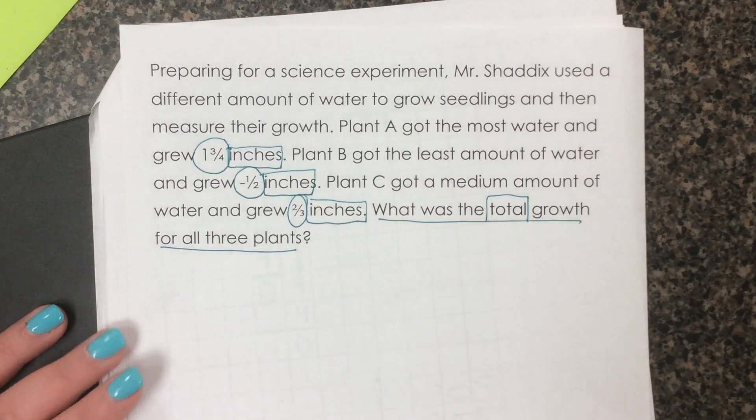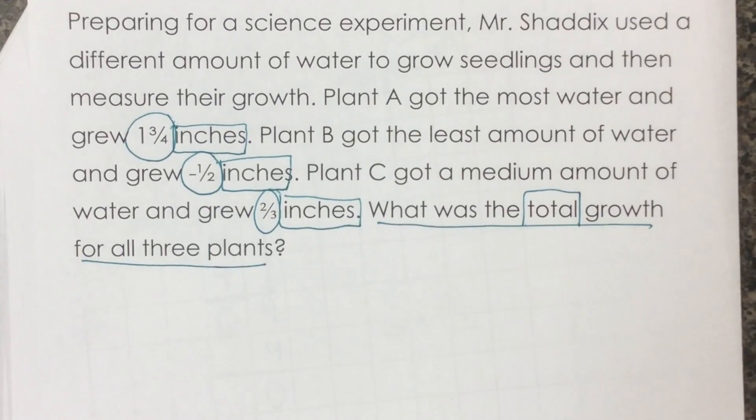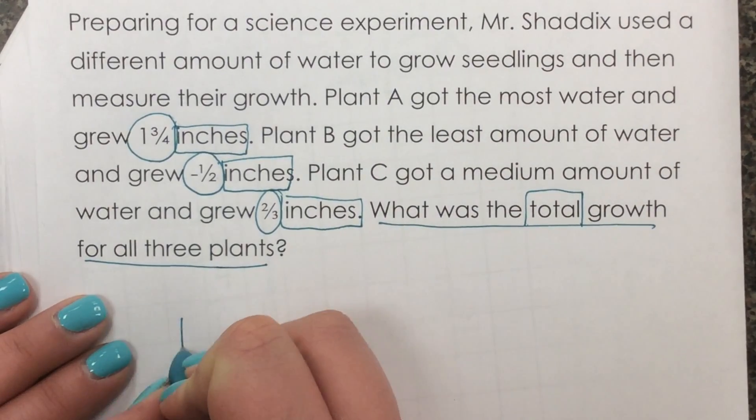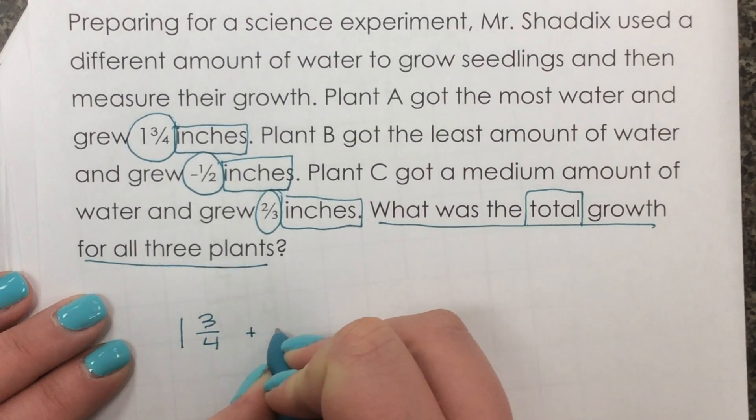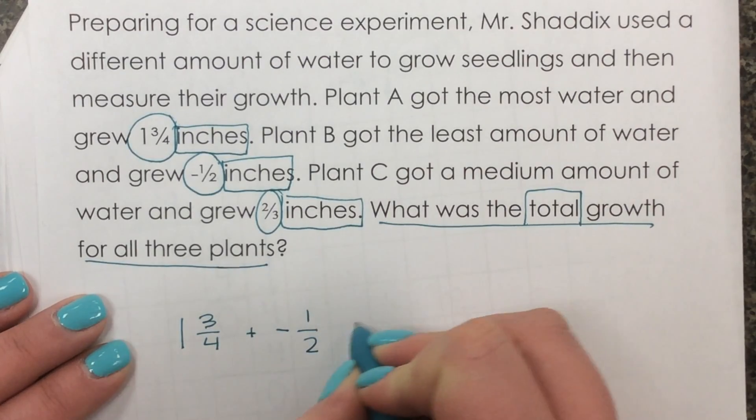So we're looking for the total. So we have to add these three amounts. So I have one and three fourths plus negative one half plus two thirds.